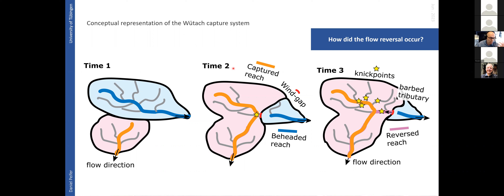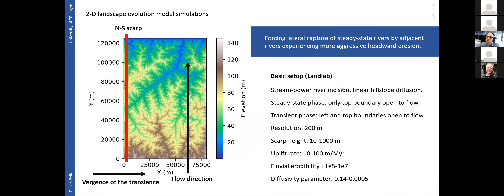To understand how we get from time two to time three, I explored 2D landscape evolution model simulations. I start with an initially steady-state river channel flowing northward, create a north-south escarpment opening flow to the left side, generating a transient that moves rightward and eventually intercepts the main system laterally. I then document how the system evolves from there.